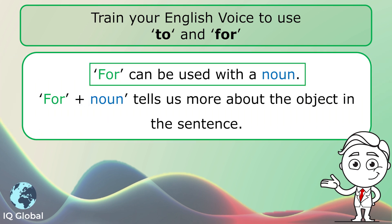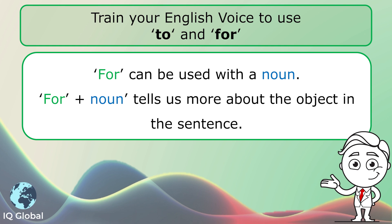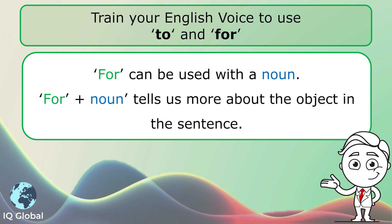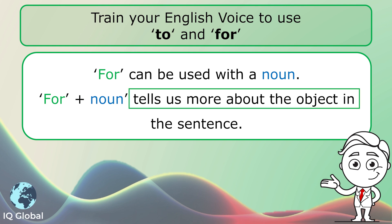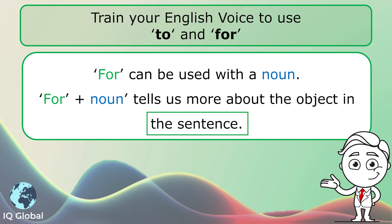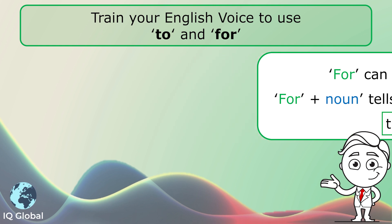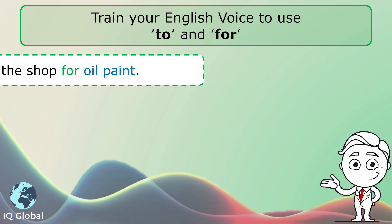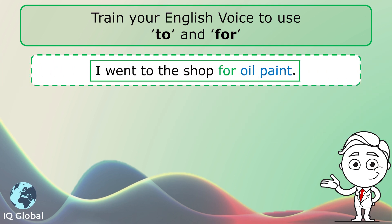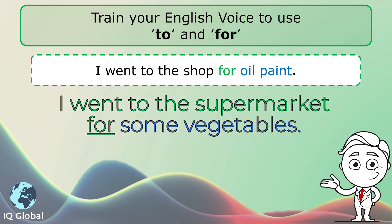'For' can be used with the noun. The structure is 'for' plus noun, and this tells us more about the object in the sentence. For example: I went to the shop for oil paint, or I went to the supermarket for some vegetables.